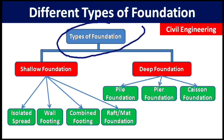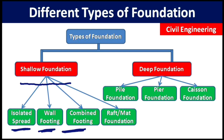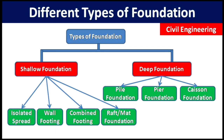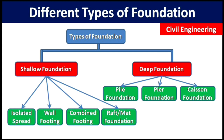The different types of foundation are summarized into two main categories: shallow foundation and deep foundation. Shallow foundation is further categorized into isolated spread footing, wall footing, combined footing, and raft or mat foundation. Deep foundation is categorized into three types: pile foundation, pier foundation, and caisson foundation.